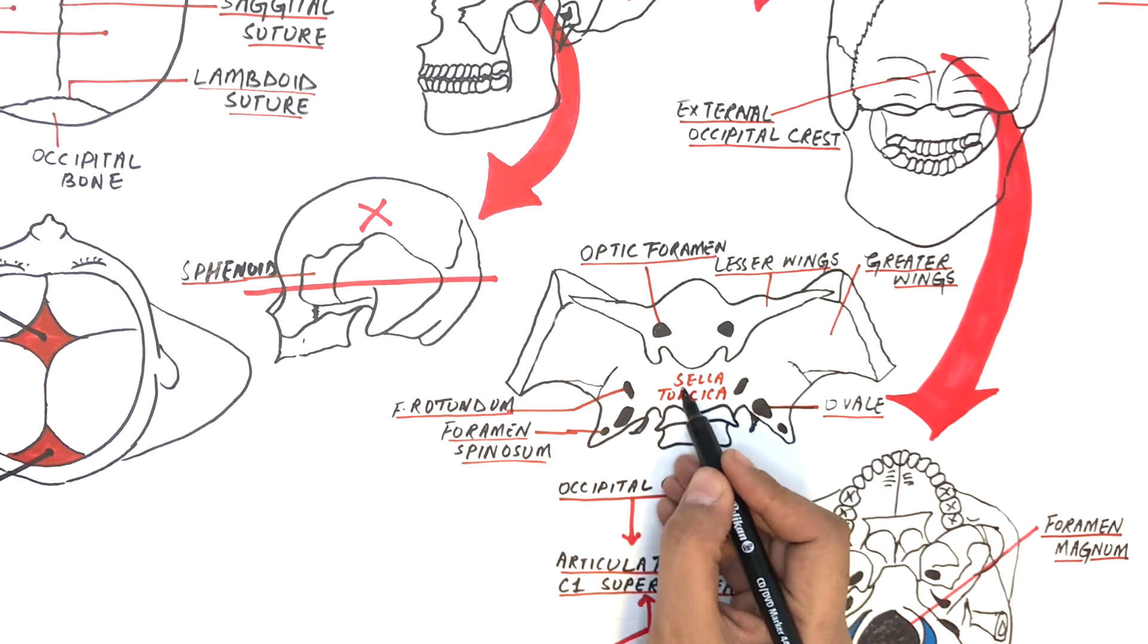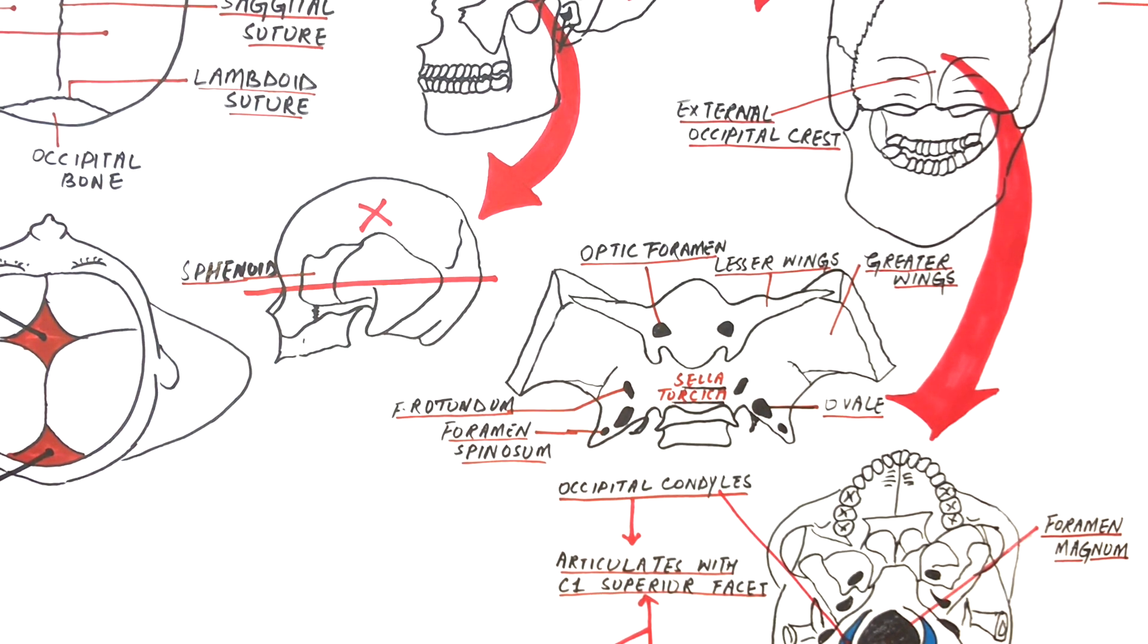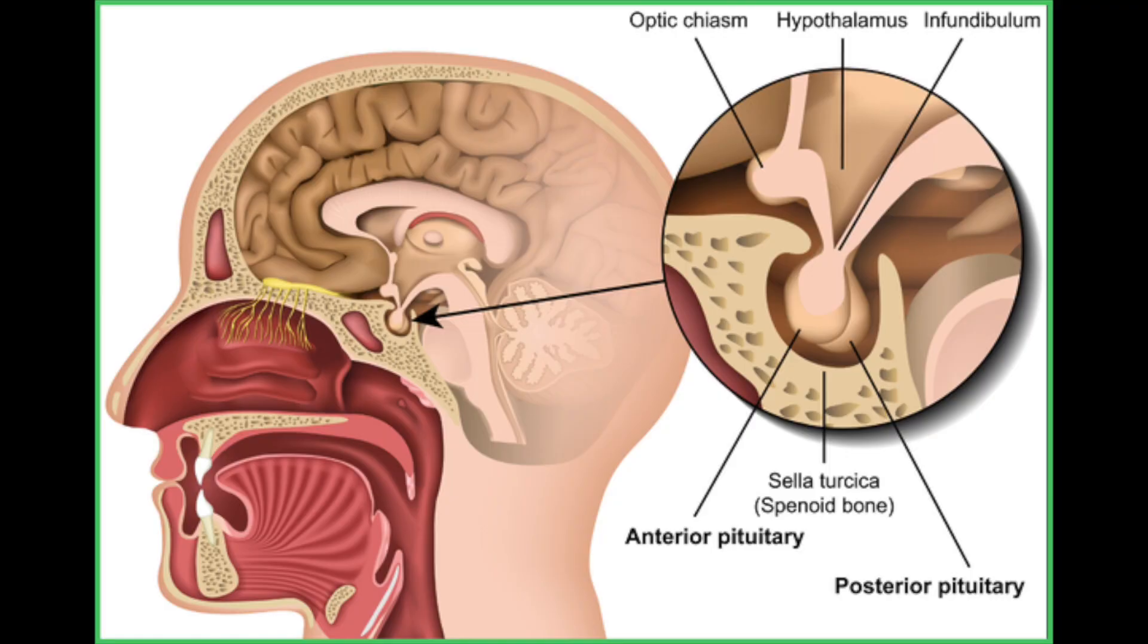Another important structure in the sphenoid bone is the sella turcica. Sella turcica means Turkish saddle. It's a small depression which is entirely occupied by the pituitary gland or the hypophyseal gland, known as the major endocrine gland.